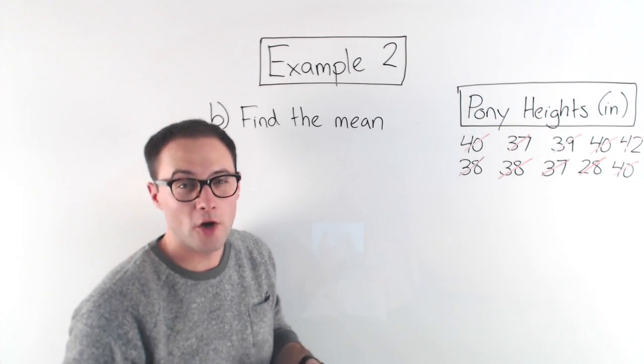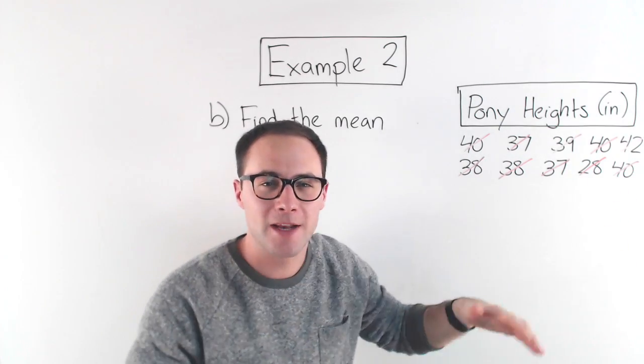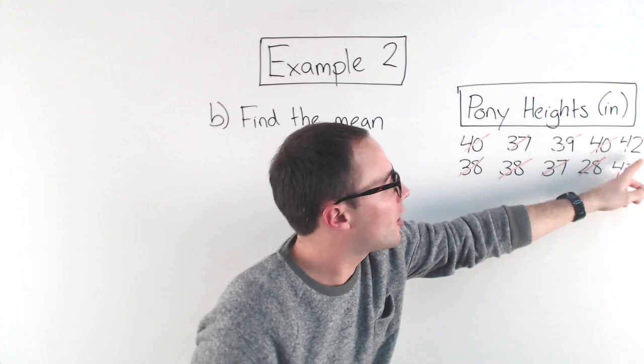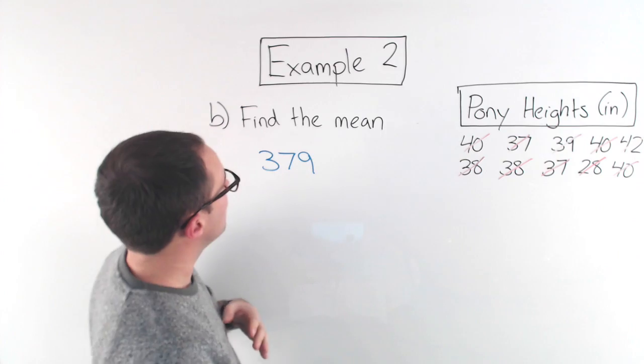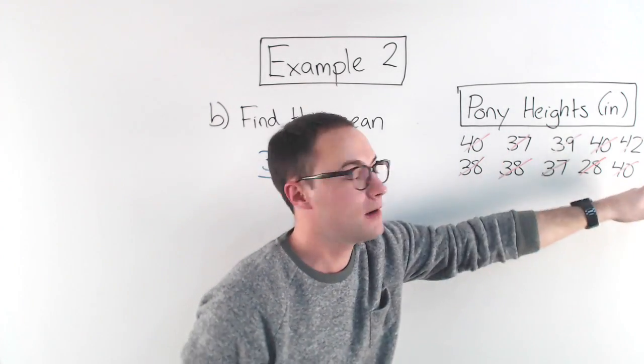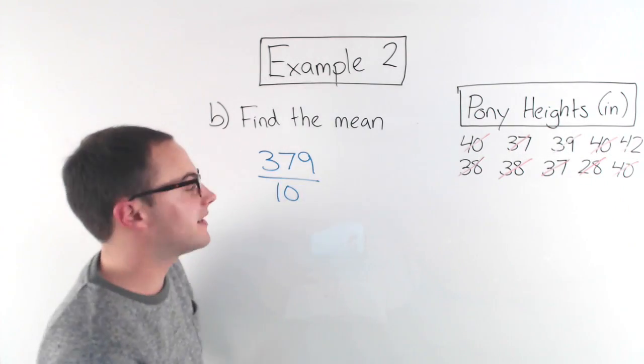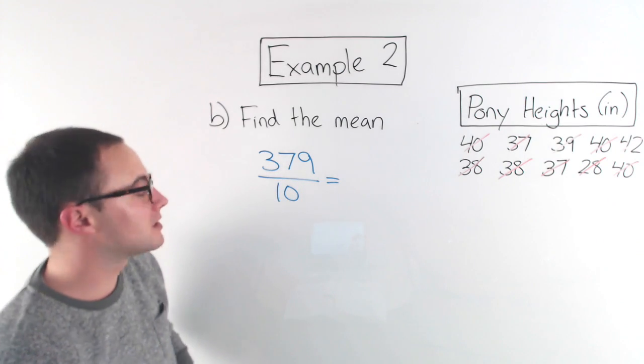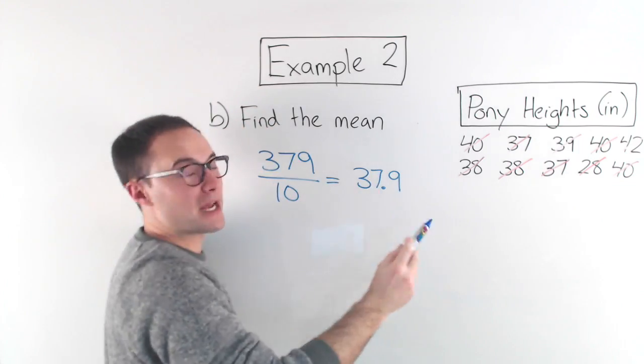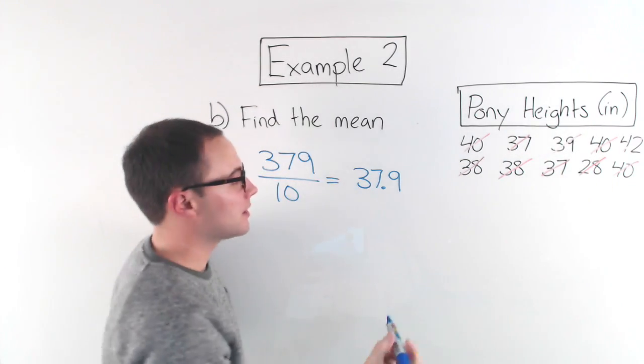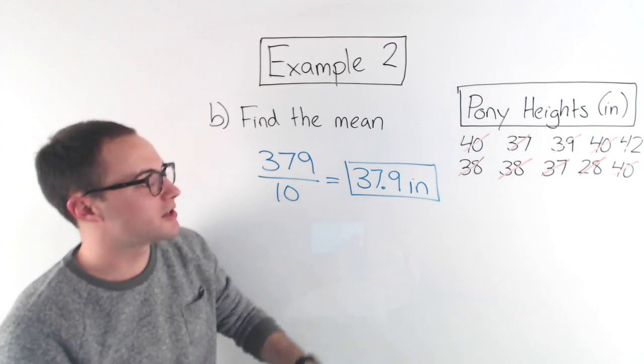Let's try part B. Part B is just find the mean. So again, the mean is the sum of all your data values divided by how many values there are. So if we add all of this up, and hopefully you get 379, that's what I got.